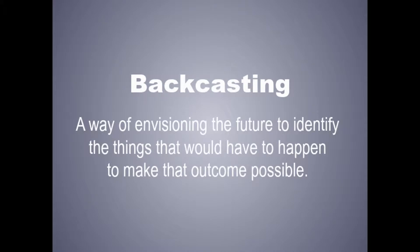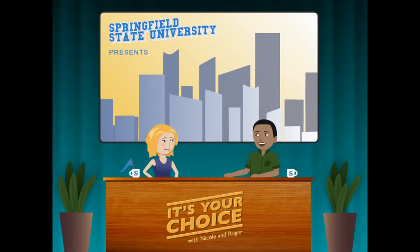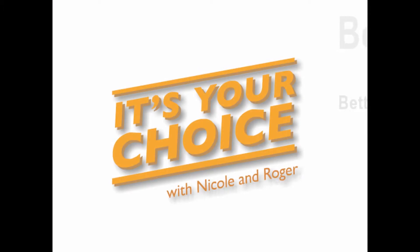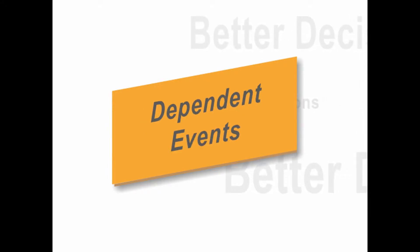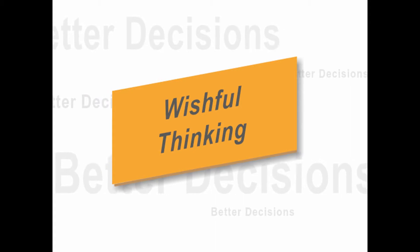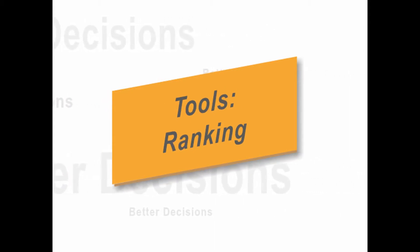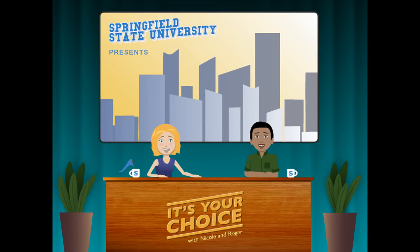Backcasting is a way of envisioning the future to identify the steps that would have to happen to make that outcome possible. A bunch of things would have to occur for Amy to get a reward, compared to basically nothing for him to get away. So the reward should be given a lower estimate. Now you're thinking probabilistically. Today on It's Your Choice, Nicole and Roger introduced some basic probability concepts like independent and dependent events. They discussed the gambler's fallacy and wishful thinking, which are common traps when estimating probabilities. They also introduced useful tools like ranking and backcasting to help with the process. Reviewing this stuff reminds me that I have a test in my marketing class tomorrow and I haven't studied at all yet. So what's the likelihood that you'll pass? And that's my cue — see you next time on It's Your Choice.